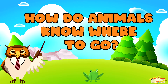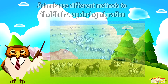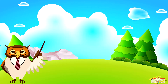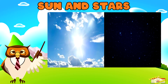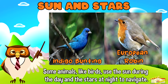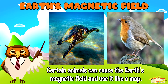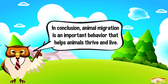How do animals know where to go? Animals use different methods to find their way during migration. Sun and stars: some animals, like birds, use the sun during the day and the stars at night to navigate. Earth's magnetic field: certain animals, like sea turtles and some birds, can sense the Earth's magnetic field and use it like a map.